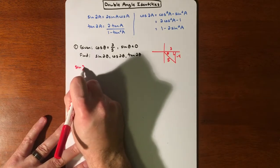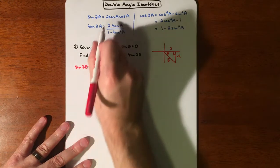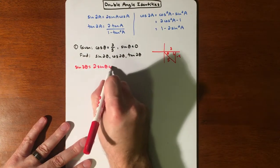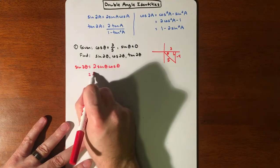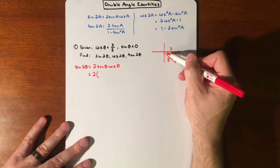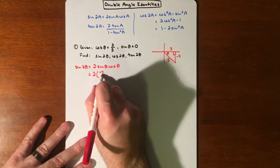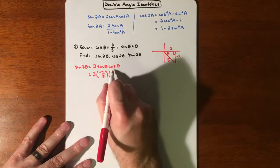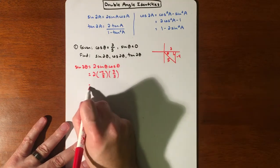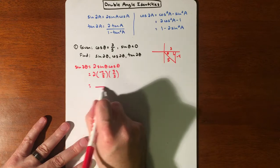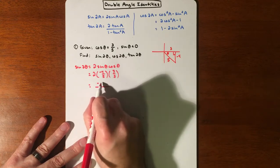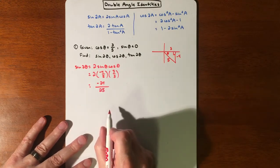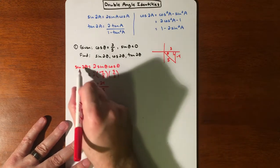So if we do sine of 2θ we're just going to plug things into the formula. It's going to be 2sin(θ)cos(θ), which is 2 times -4/5 times 3/5. If we multiply all that together we are getting -24/25. So that is our sine of 2θ.